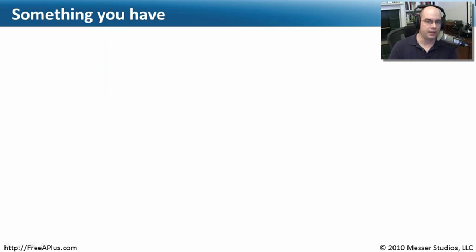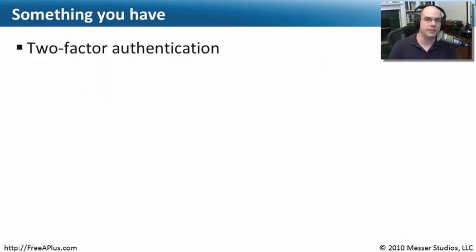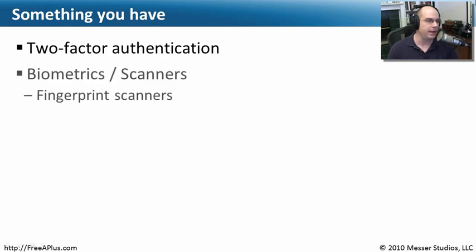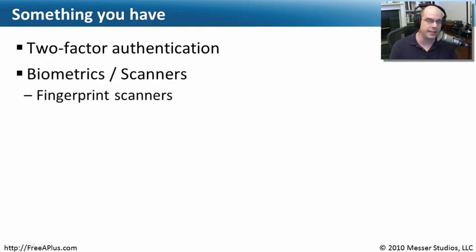If a username and a password isn't enough, then we need to think about giving authentication based on something you might have. This is called two-factor authentication, because you have to go through a couple of steps. You first have to know your username and password, and then you go to the second factor of authentication, which might be something like a biometric scan.